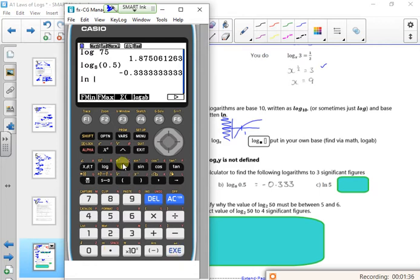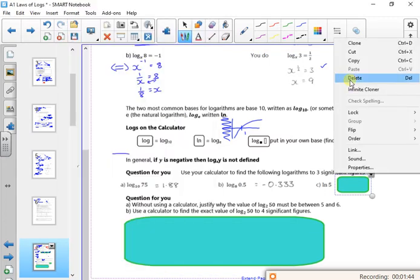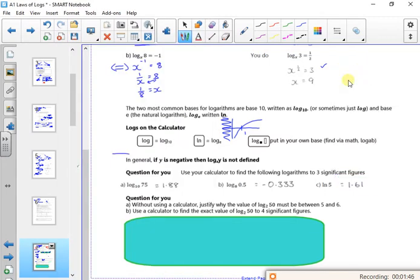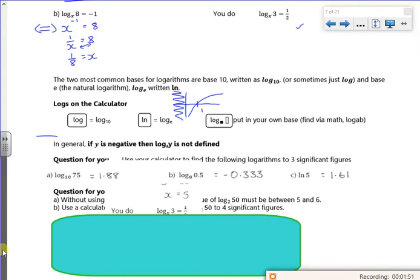Then ln, ln, the one we used loads each year, ln of 5, 1.609. So that's just using the calc to get the values out. So there's a question for you there, so I'll set up this question for you.